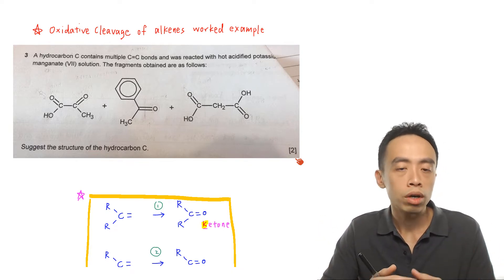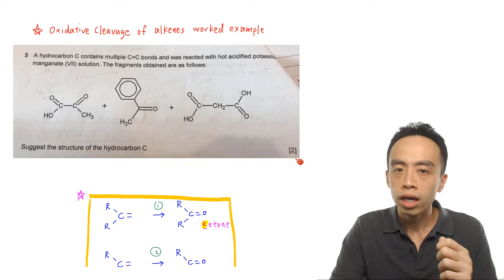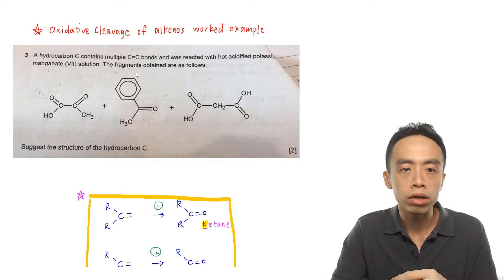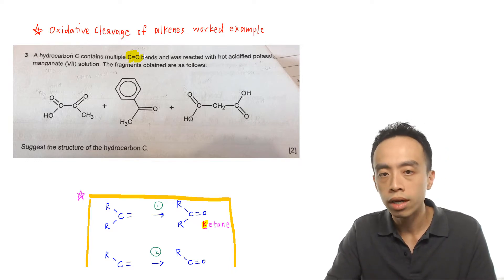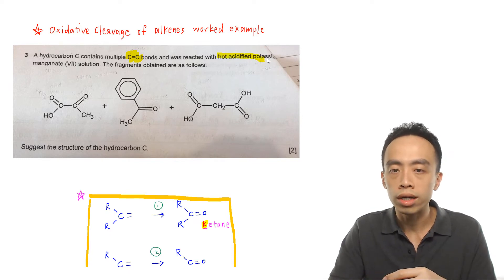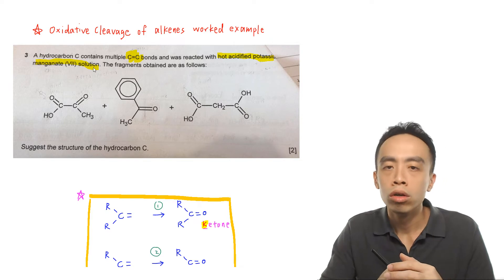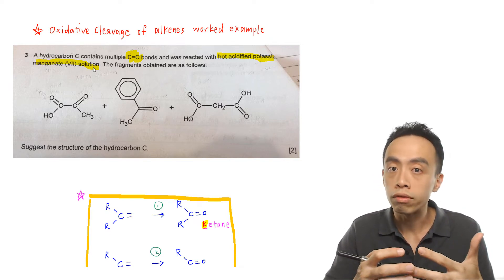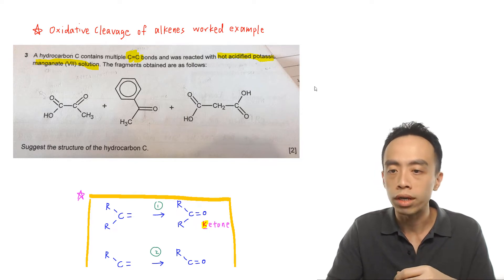The first thing we have to understand is what reaction we are looking at. We are looking at the strong oxidation of alkenes, because we have the C double bond C bonds and we know that this is a strong oxidation because we are using hot acidified KMnO4. So let us recap the products involving the strong oxidation of alkenes.